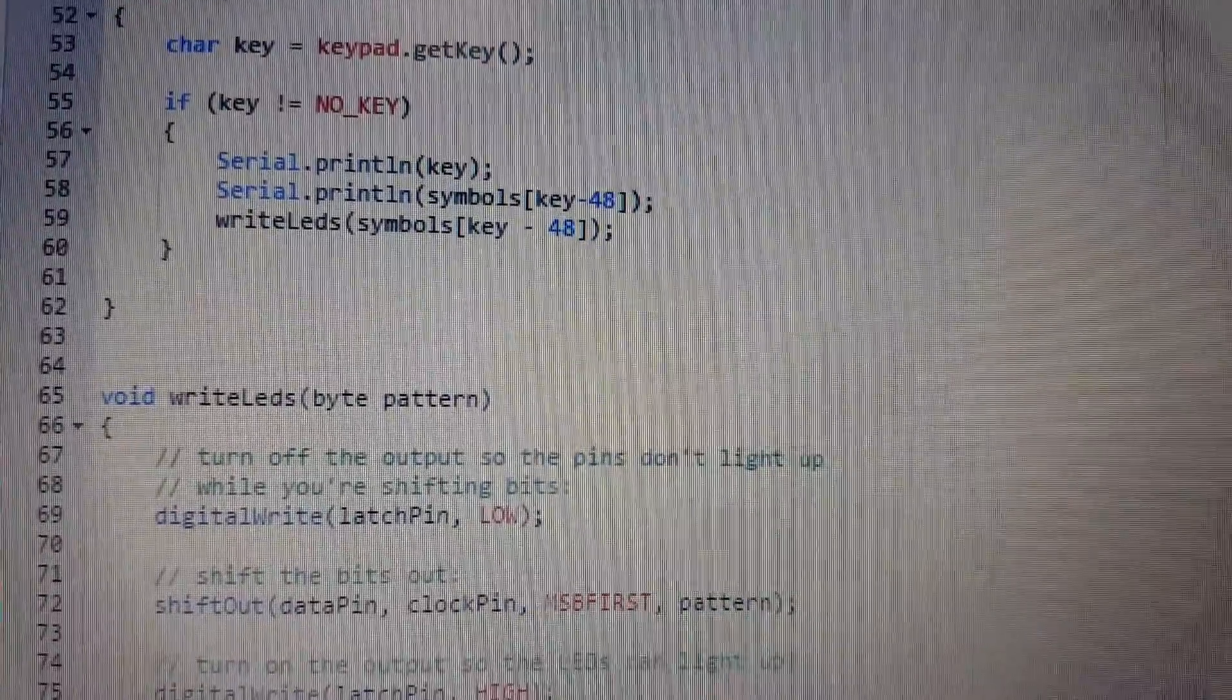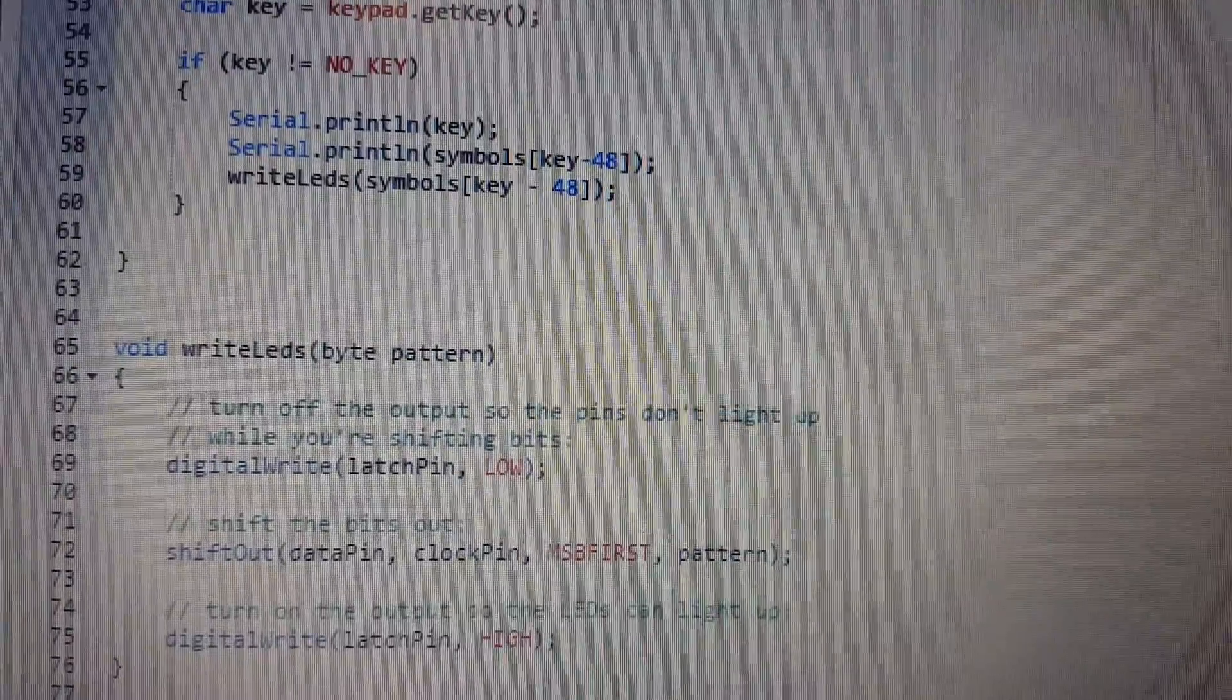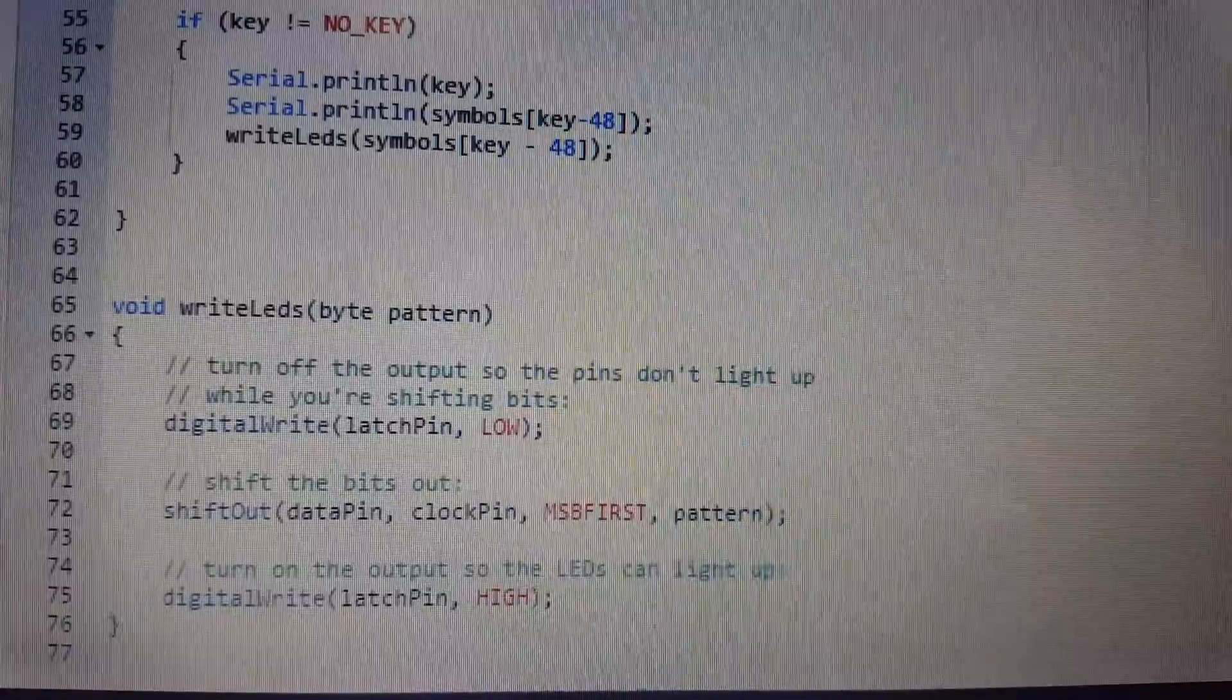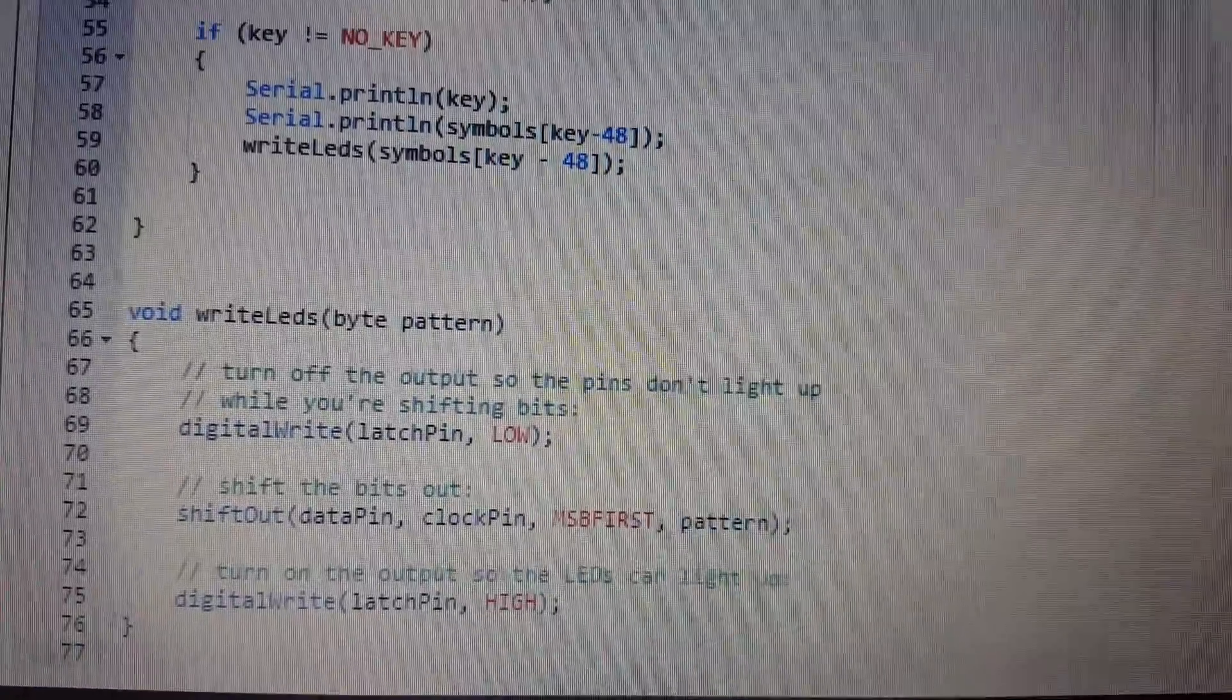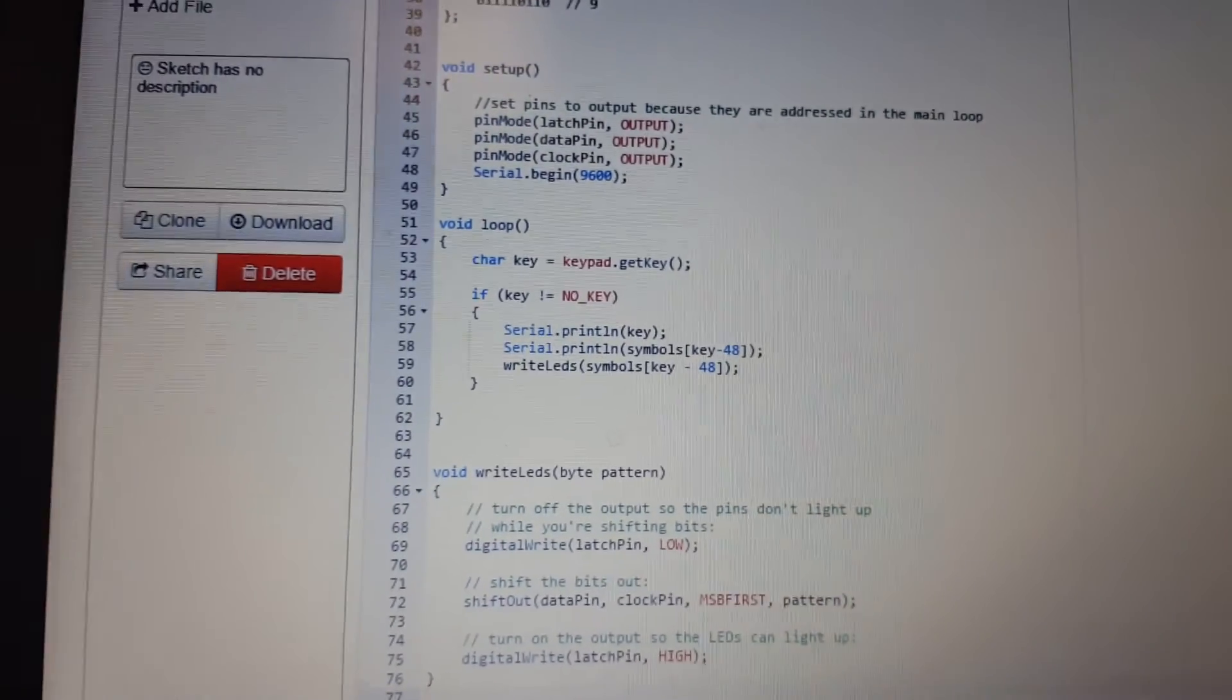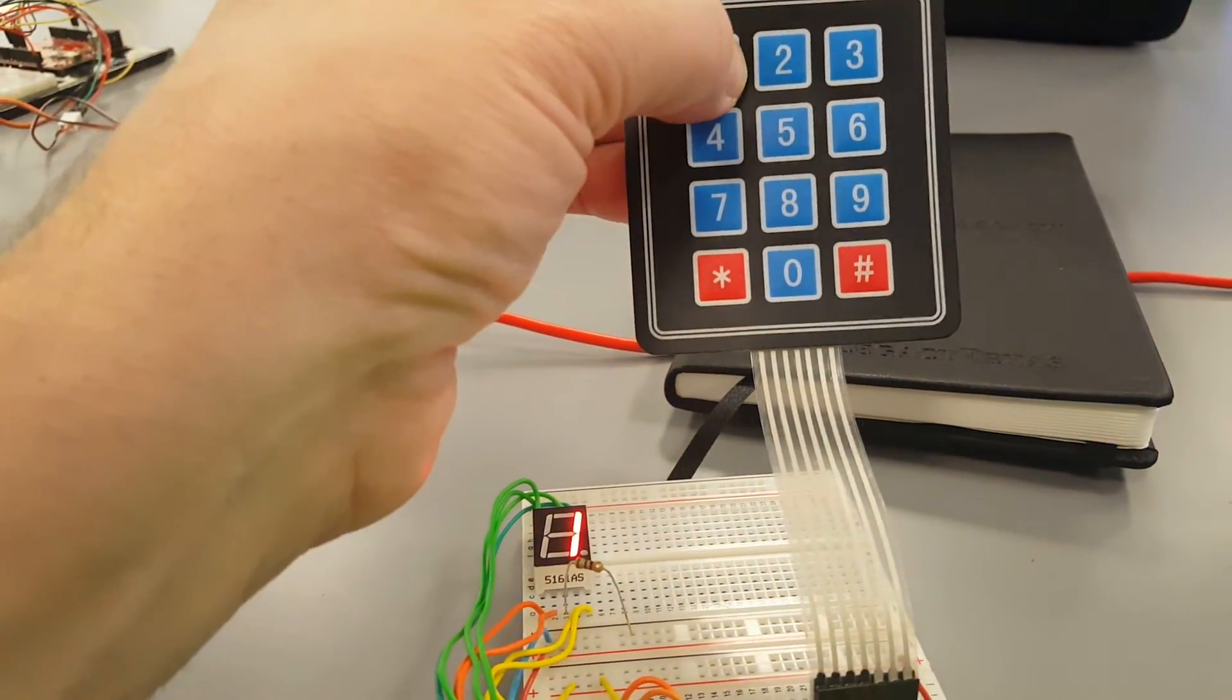Down here in the writeLEDs function, we set the latch pin low, then we call the shift out to shift the data out serially. Then we do a digital write to set the latch pin back high, and that causes the data to be latched out. There you have it, that's our little test for today. Thank you for watching.